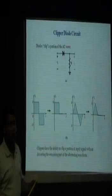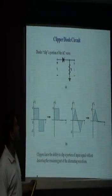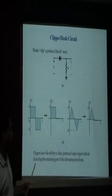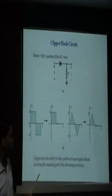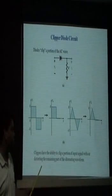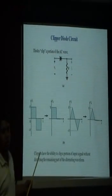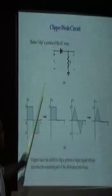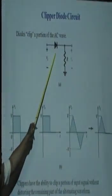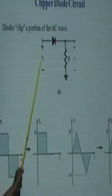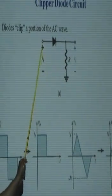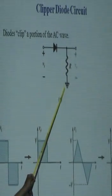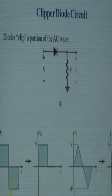This is the basic slide for the clippers. Here we find that the definition of the diode clipper is: the diode has the ability to clip a portion of the input signal waveform without distorting the remaining part of the waveform. This is the basic circuit — this is the diode and as per the input signal, it is connected in the forward bias configuration.